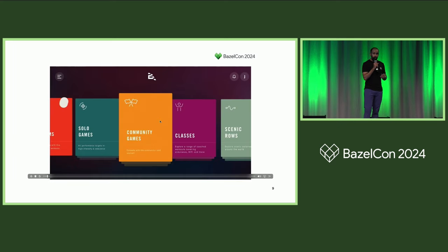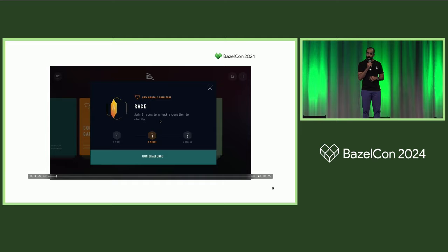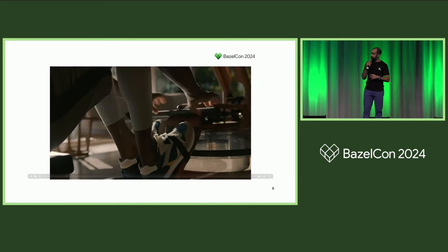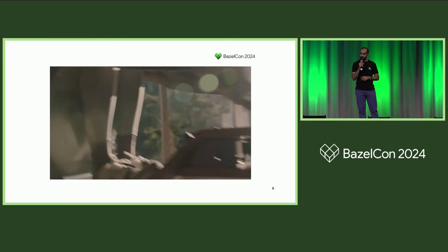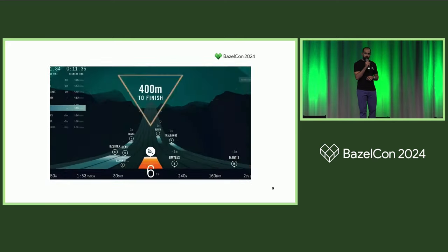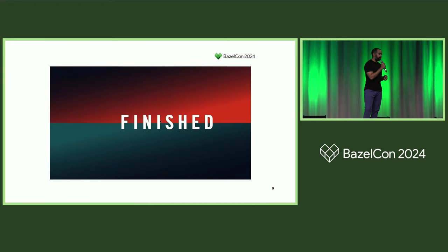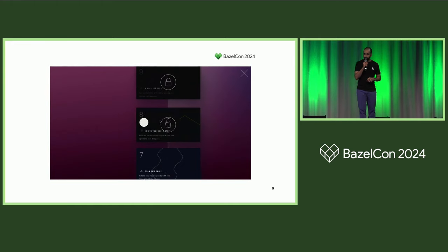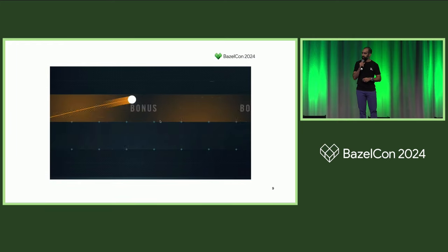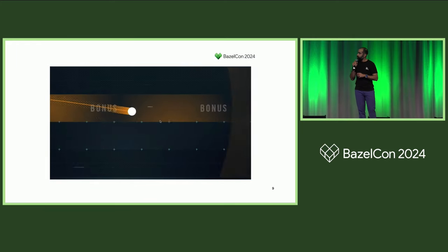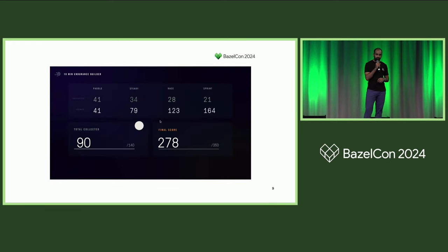So first, who are we? Ergata helps you build a fitness routine by turning it into a competitive game. Our flagship product is a rowing machine with a 17-inch tablet connected to it. But don't think Peloton on a rowing machine — think Mario Kart on a rowing machine. More generally, think of us as a game studio for fitness.